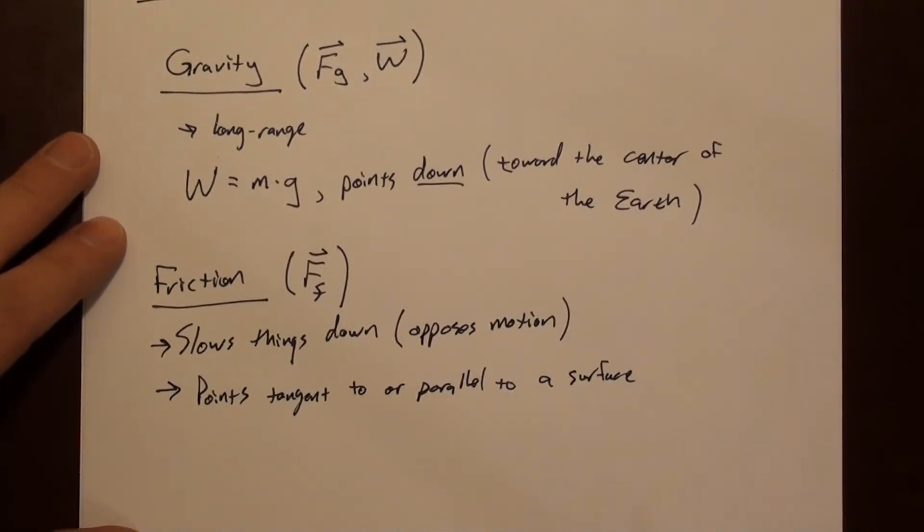So an example is maybe rubbing your feet on the carpet. You rub your foot maybe forward, the force of friction is pushing backward. So it's not up or down, it's horizontal, which is parallel to the surface of the floor.